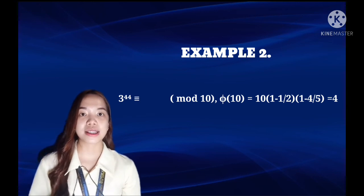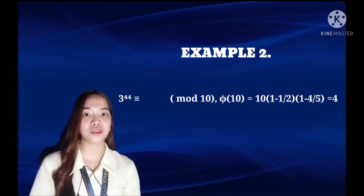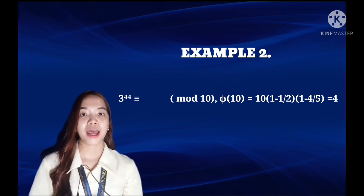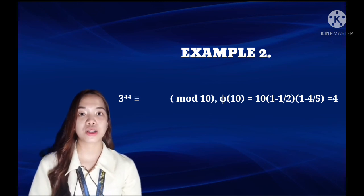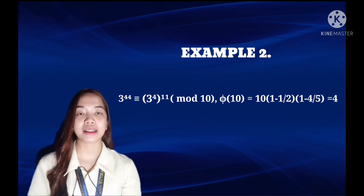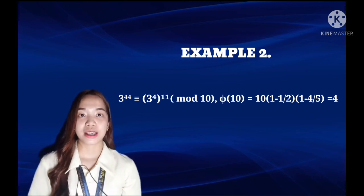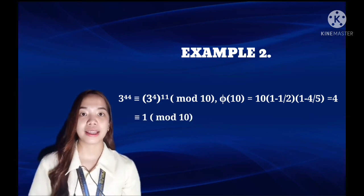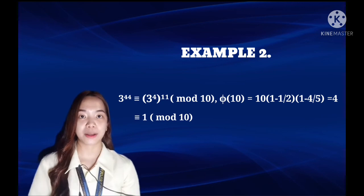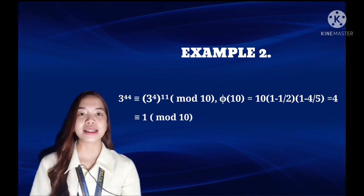So since this is 4 and this is 44, maybe the best strategy here is to write this as (3^4)^11. And we know that 3^4 is congruent to 1 mod 10. So this gives us 1^11 which is 1 mod 10.